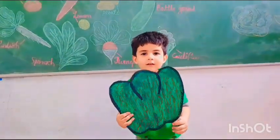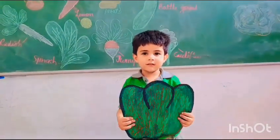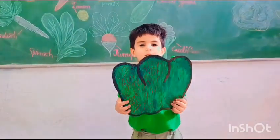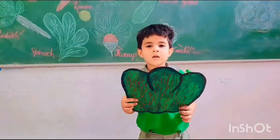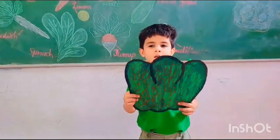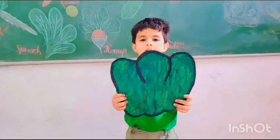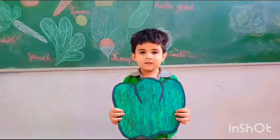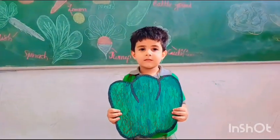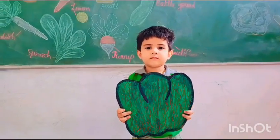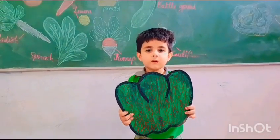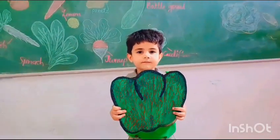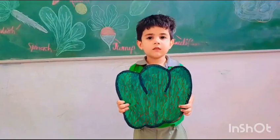Which table is this? It's a capsicum. Okay. Capsicum is a? And which color is this? Green. Okay. Green.